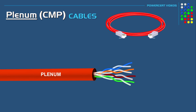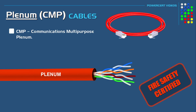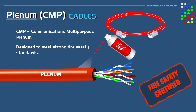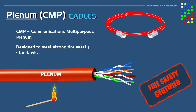Plenum cables are also known as CMP, which stands for Communications Multi-Purpose Plenum. They are approved by Underwriters Laboratories, a global safety certification company, and have been certified for use in open air environments, designed to meet strong fire safety test standards. The outer jacket of plenum cables is made with special plastics and coated with Teflon FEP, a flame retardant made by DuPont. These cables are designed for hazardous open air spaces in a building, and if burned, they won't release any toxic gases. They are more expensive than non-plenum cables and are primarily used for commercial use.